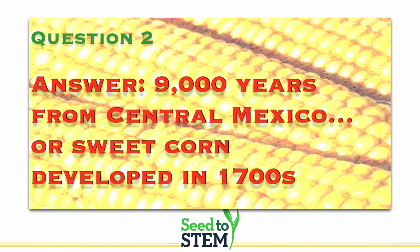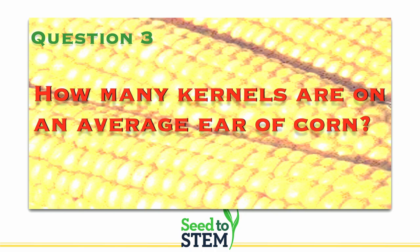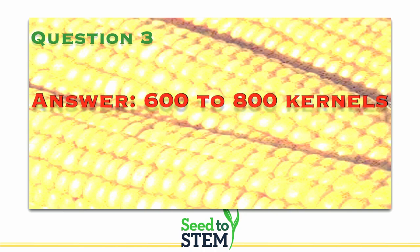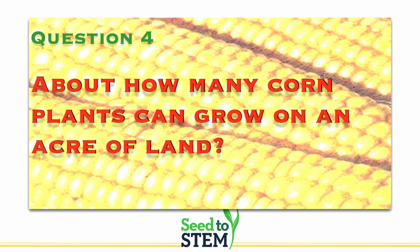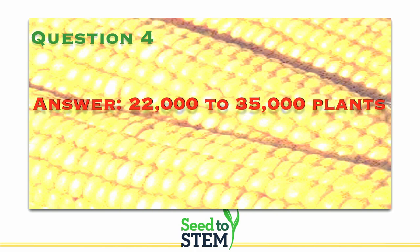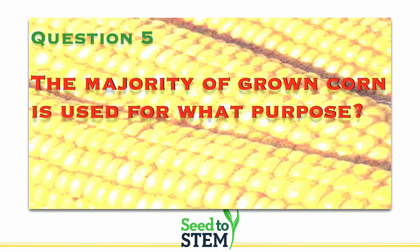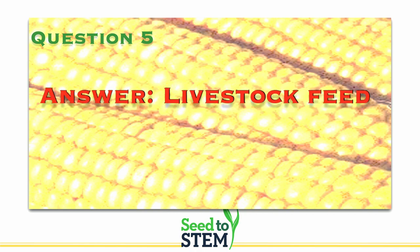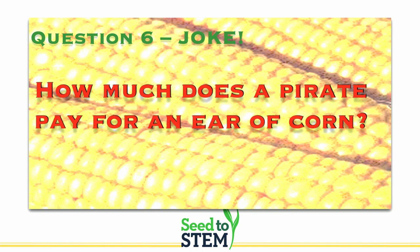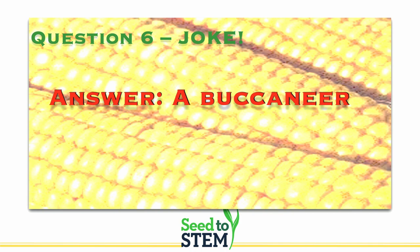Name two basic types of corn — a lot of people are going to say popcorn or sweet corn, and you might get flint corn, indent corn, flour or blue corn. How long has corn been around? About 9,000 years back in Mesoamerica and Central Mexico. Sweet corn has only been around since the 1700s. How many kernels are on an average ear of corn? We have 600 to 800. How many corn plants can grow on an acre of land? About 30,000 on average. What is the majority of grown corn used for? Livestock feed. And to end with a joke: how much does a pirate pay for an ear of corn? About a buck an ear.